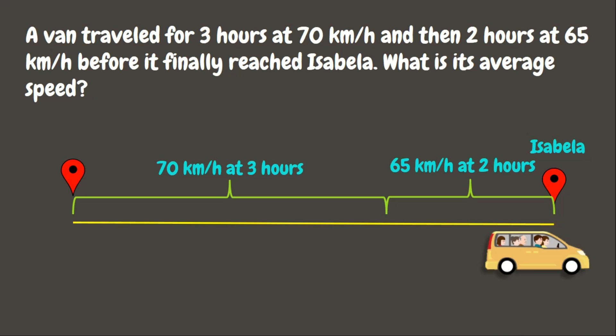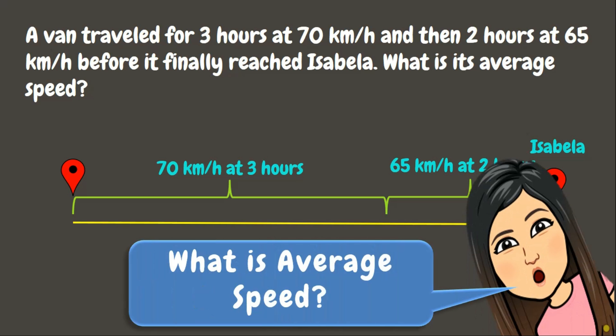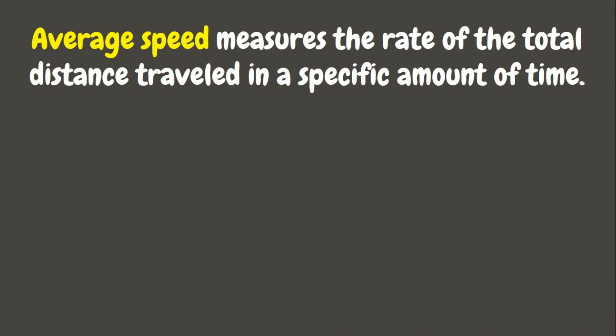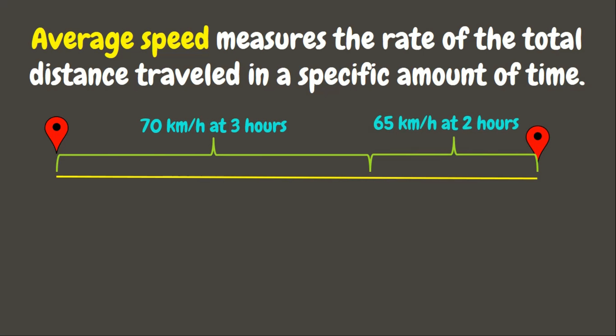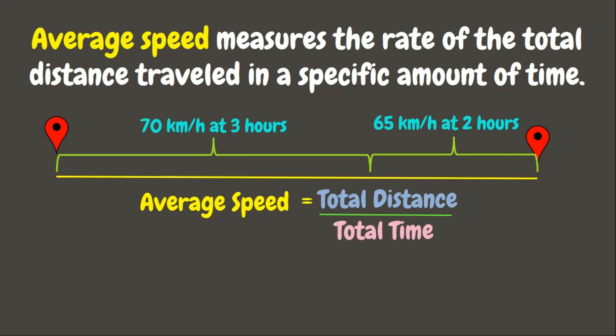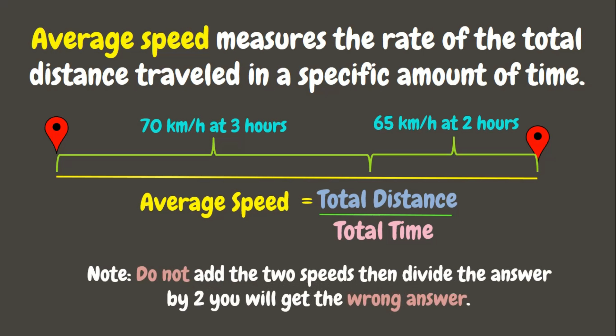But wait — do you know what average speed means? Average speed measures the rate of the total distance traveled in a specific amount of time. To solve for the average speed, we simply need to divide the total distance traveled by the total time consumed. Take note: we do not add up the two speeds and divide by two — you will just get the wrong answer.